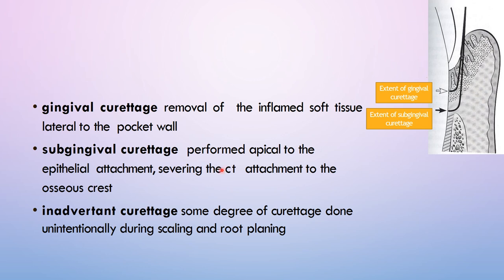Curettage can be of different types. Gingival curettage is the removal of inflamed soft tissue lateral to the pocket wall. Subgingival curettage is performed apical to the epithelial attachment, severing the connective tissue attachment to the osseous structures. Inadvertent curettage is when some degree of curettage is done unintentionally during scaling and root planing.